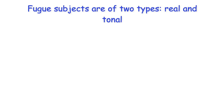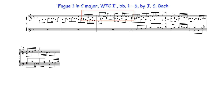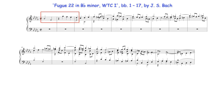Fugue subjects are of two types: real and tonal. Real subjects, possibly the older of the two, preserve exactly in the answer the subject's intervallic content. For example, here the answer reproduces the subject's melodic contour but begins on the dominant note. While tonal subjects alter part of the answer's melodic contour, such as here, where in the opening part the initial leap from Bb to F, the first and fifth degrees in Bb minor, is answered by the leap from F to Bb in the next part.